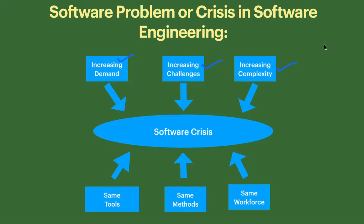Another reason is not fulfilling the requirements of the customer or client. Additionally, if we are using the same tools, same methods, and the same workforce — for example, if we have only 10 members on the software development team but demand and challenges keep increasing — and we are still not fulfilling customer requirements, that is another reason for software crisis.